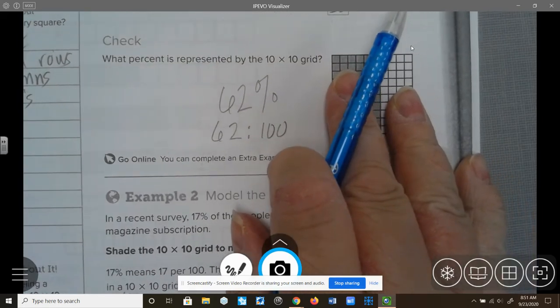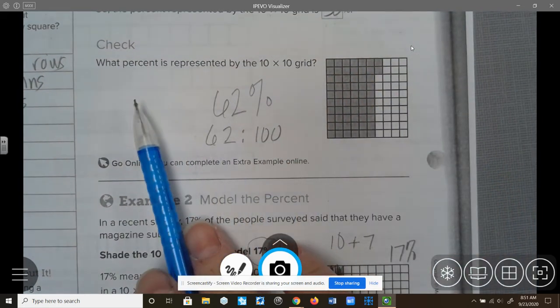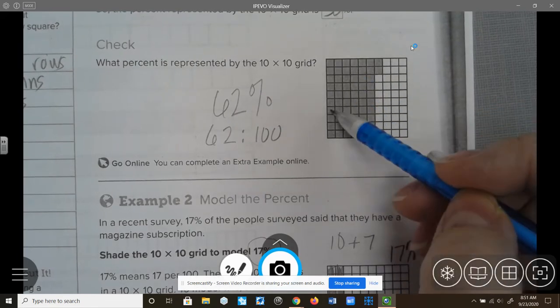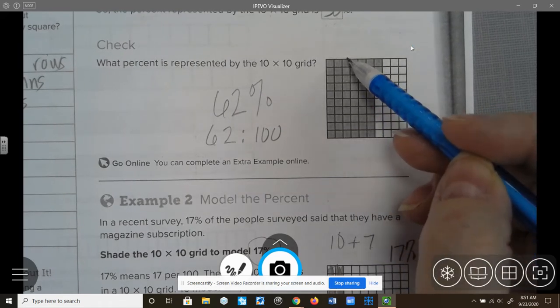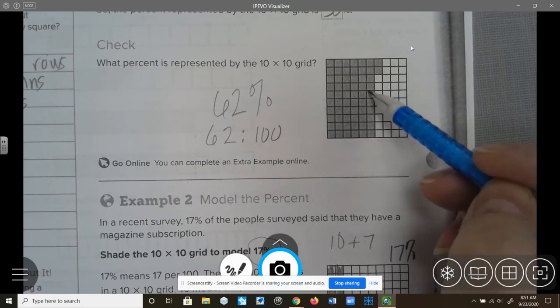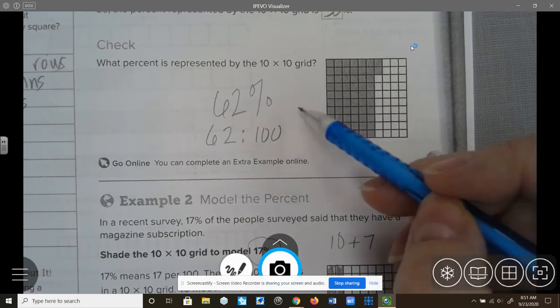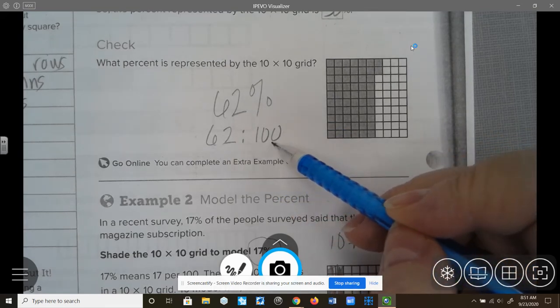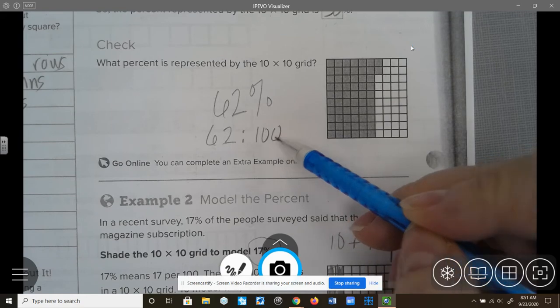Check. What percent is represented on this grid? So what I did was I went ahead and counted the rows. Here's 10, 20, 30, 40, 50, 60, 61, 62%. So 62 squares are shaded out of the 100 that are represented.